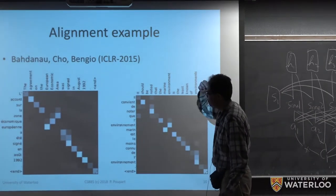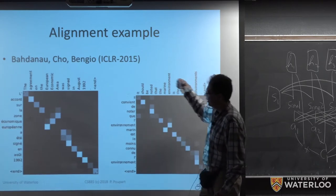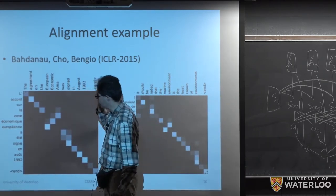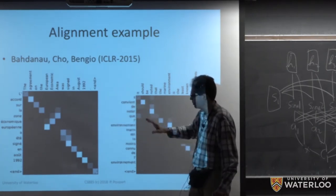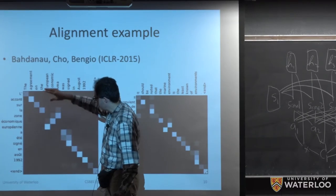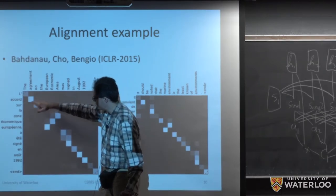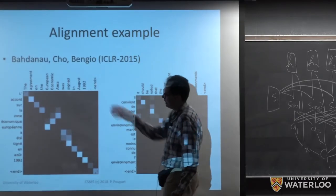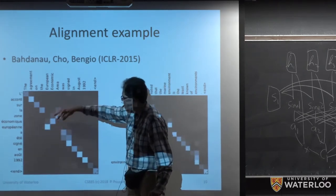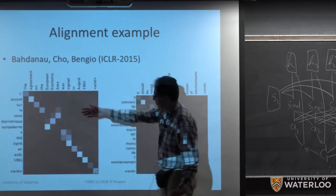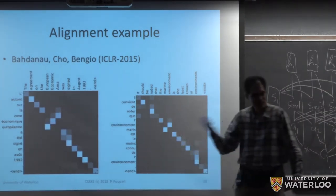As an example, we have sentences in French and English. We can see where attention was focused: 'the' was closely related to 'l'apostrophe,' 'agreement' was closely related to 'Accord,' and so on. In different languages, words often don't follow the same order — there's a difference in word ordering between French and English — which is why we see this non-diagonal pattern in the attention alignment.